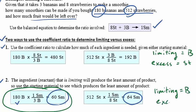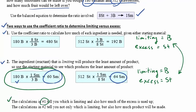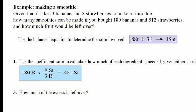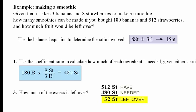That makes the other reactant — strawberries — the one in excess, and both methods gave the same conclusion. The calculations in method 1 tell us which is limiting and how much of the excess is used up; the calculations in method 2 tell us not only which is limiting but also how much product will be made. So which method you use is determined by what information the question is asking. We still need to calculate how much of the excess is left over. We know 480 strawberries are needed to react with the limiting amount of bananas, and we have 512 strawberries — the difference is 32 strawberries left over, which will not get used up in making 60 smoothies.